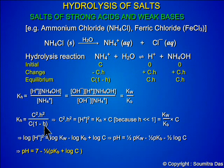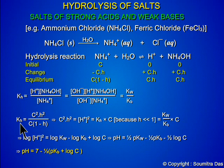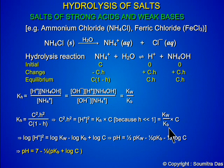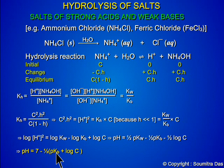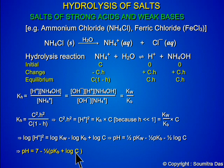Here H is the degree of hydrolysis and Kh is the hydrolysis constant, which is equal to Kw divided by Kb. The pH is calculated to be 7 minus half pKb plus log C, where C is the concentration of the salt.